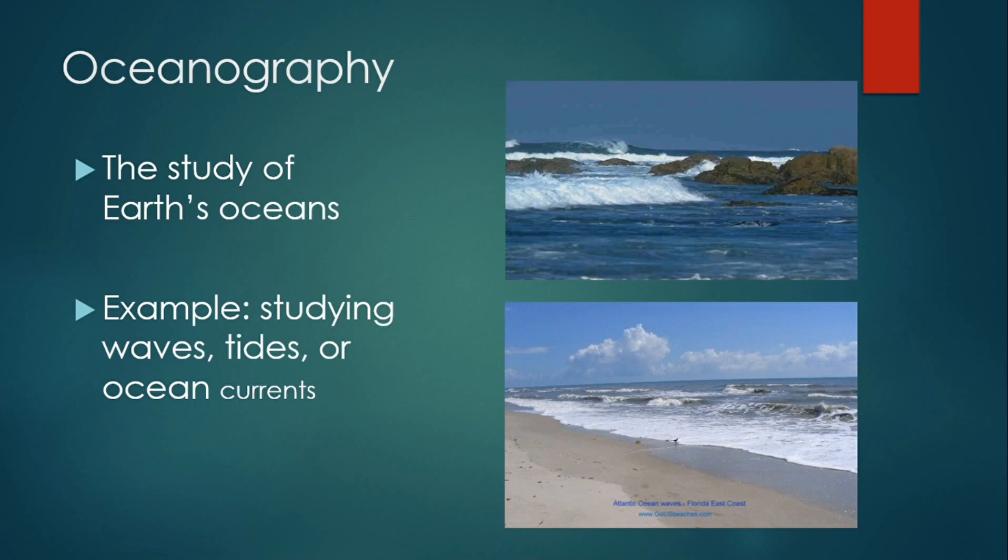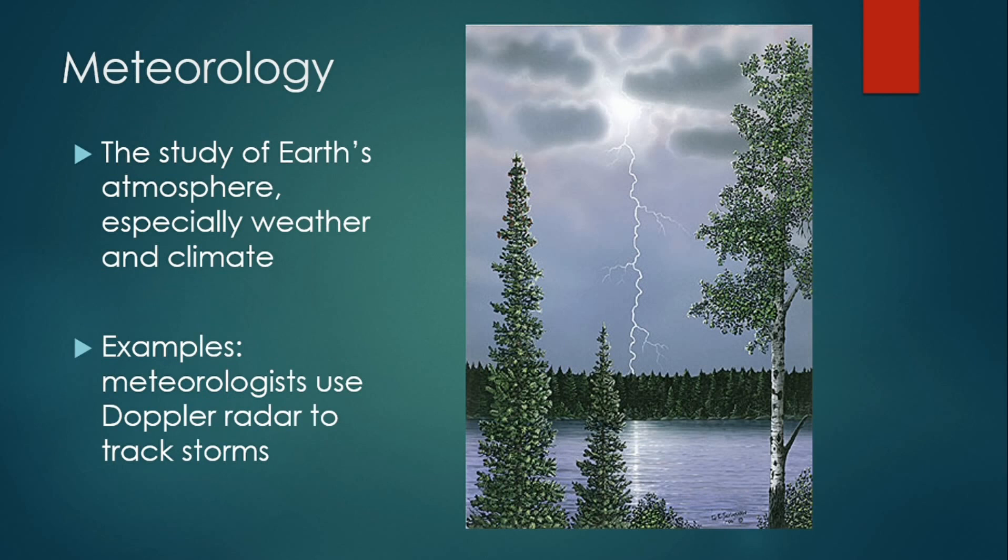Oceanography is the study of the earth's ocean, for example studying waves, tides, or ocean currents. Meteorology is the study of the earth's atmosphere, especially weather and climate. Examples are meteorologists who use Doppler radar to track storms.